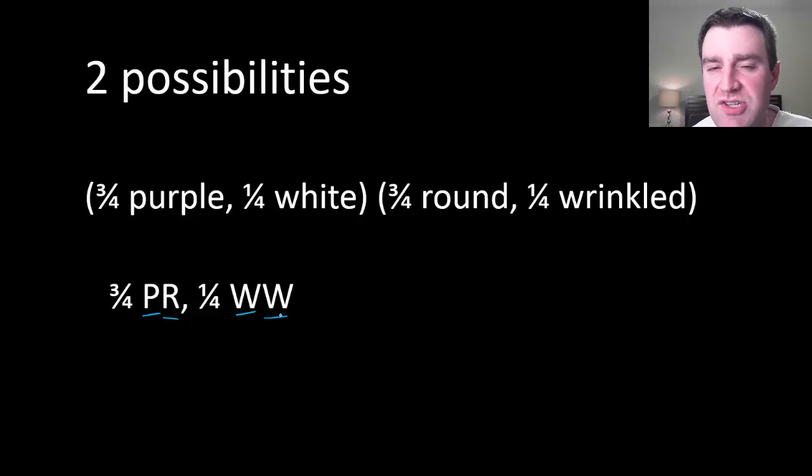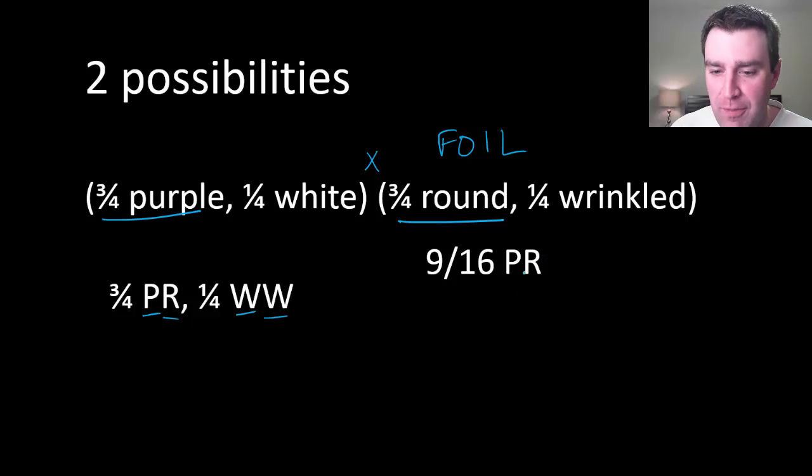Another possibility was that the two genes were completely independent of each other. A way to think about what results you might get would be to think about multiplying independent probabilities. If two probabilities are completely independent of each other, you multiply them together. To think about the results, I want to use the FOIL method from math class. You multiply the first numbers first. So three-fourths times three-fourths, we would expect nine-sixteenths of the offspring to be both purple and round.